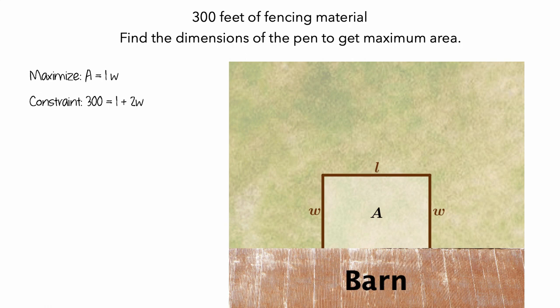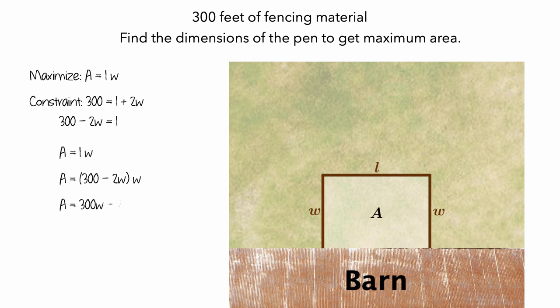Now we have two equations and two variables, and we'd like to have everything in terms of a single variable. The general strategy is to write one variable in terms of the other. We can take our constraint equation and rearrange it so that L equals 300 minus 2W. Then we substitute this expression into our area equation and distribute W to get that the area equals 300W minus 2W squared.